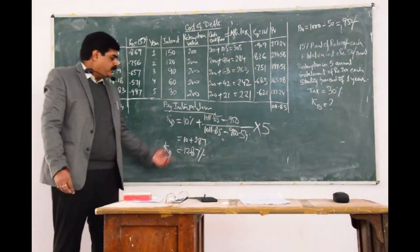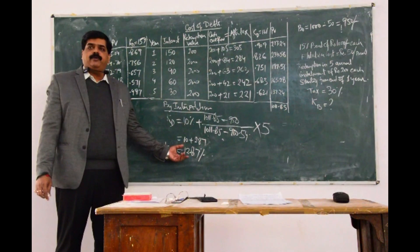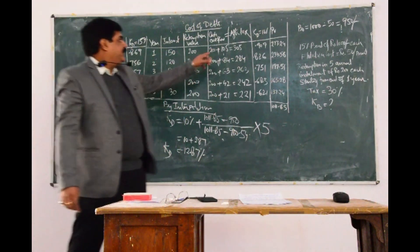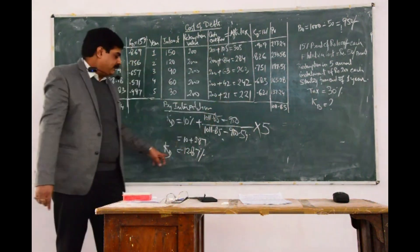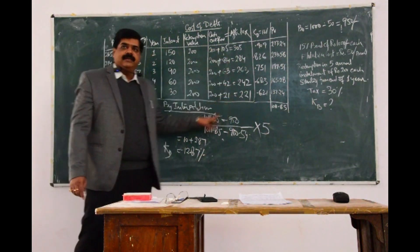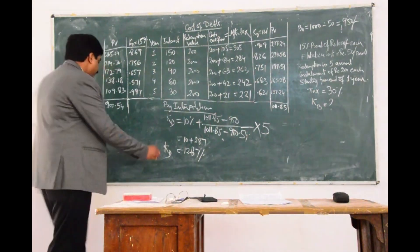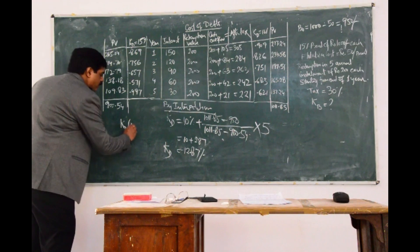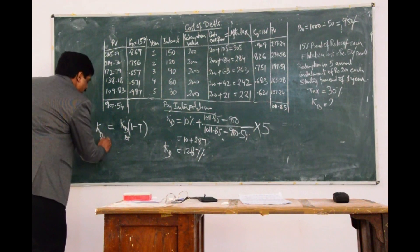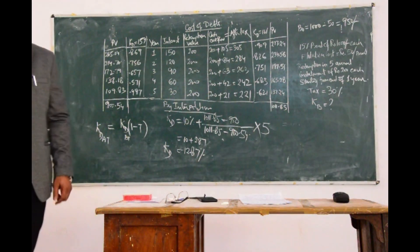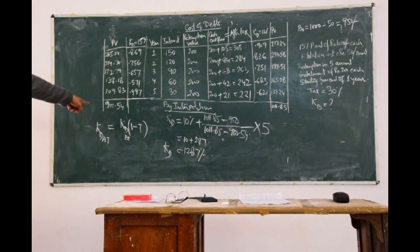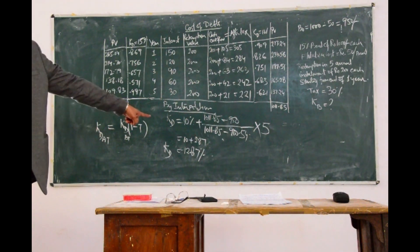This cost of debt is after tax because we already adjusted the tax along with the interest in this problem. If we had not adjusted tax here, we would have used the equation KD × (1 − T) — where KD is before tax — to get the value of KD after tax. Since tax has been adjusted in the cash flows, we do not apply that equation here.